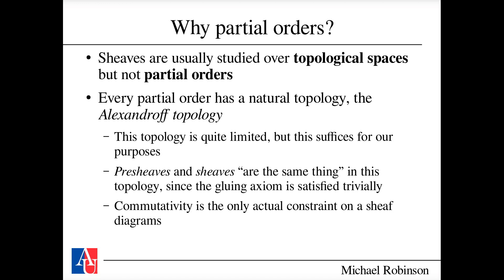Topological spaces and simplicial complexes represent two ends of a spectrum. Topological spaces are very expressive but large and hard to analyze. Abstract simplicial complexes are quite general and flexible but perhaps not as compact a representation as you might like. The go-between is that every partial order — in fact every pre-order — has a natural topology called the Alexandrov topology. Pre-sheaves and sheaves are essentially the same thing in this topology because the gluing axiom can be ensured more or less trivially.